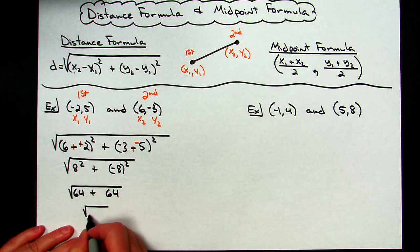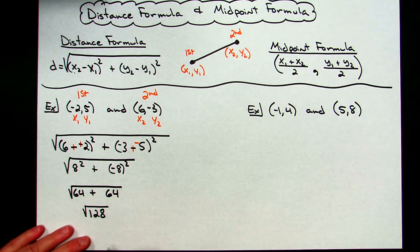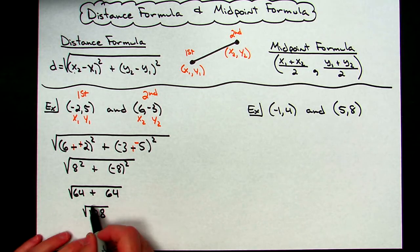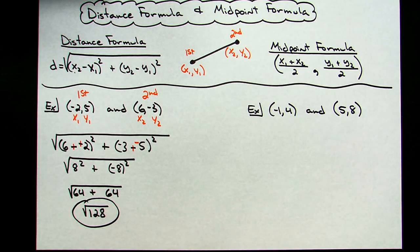Now I'm going to add on my last step, square root of 128. Now depending on what the directions say for a particular problem, you might need to simplify that radical, or if you're using a calculator, you could put it in the calculator and take it out two decimal places. But the distance between those two points is square root of 128.